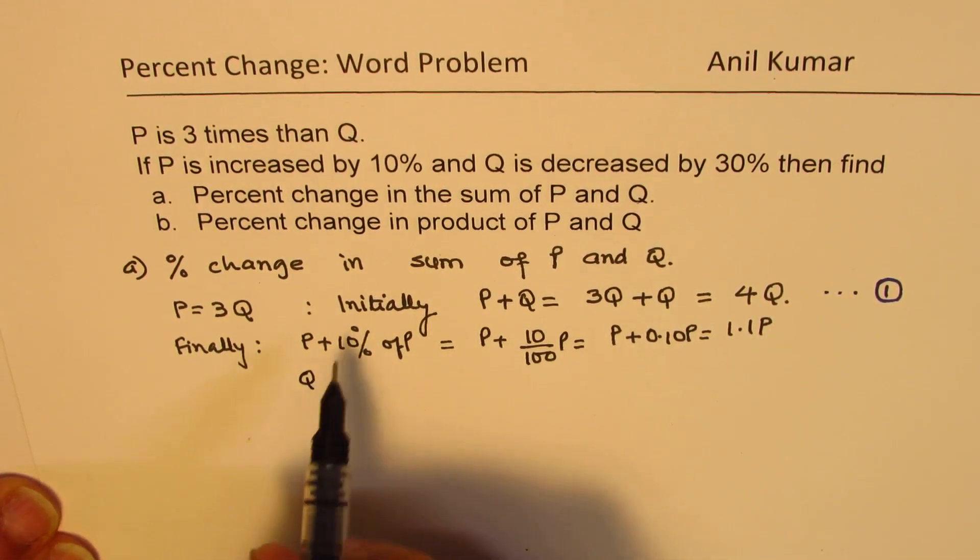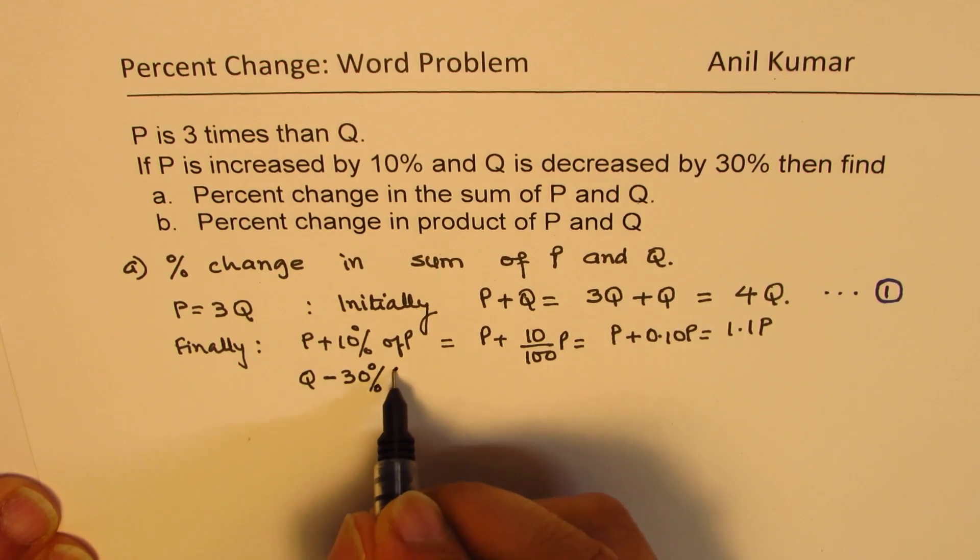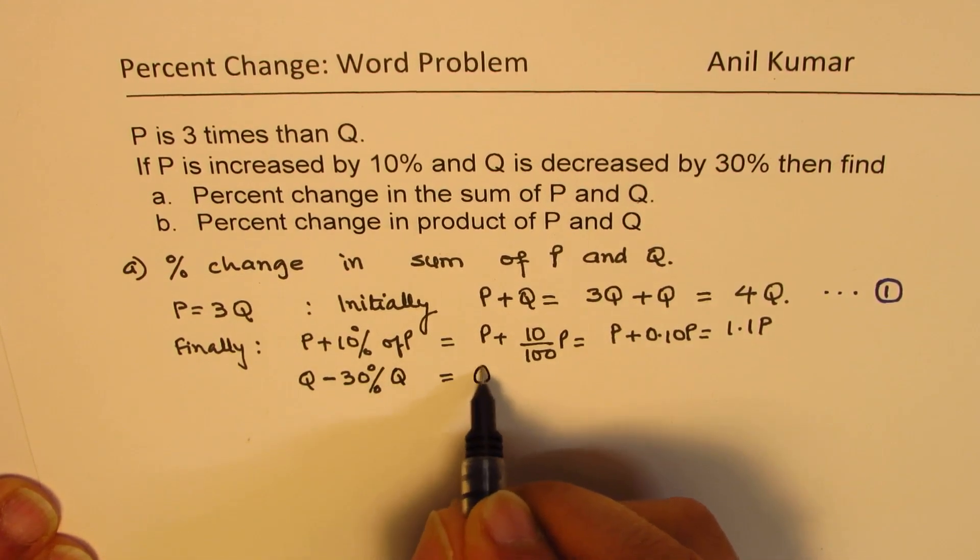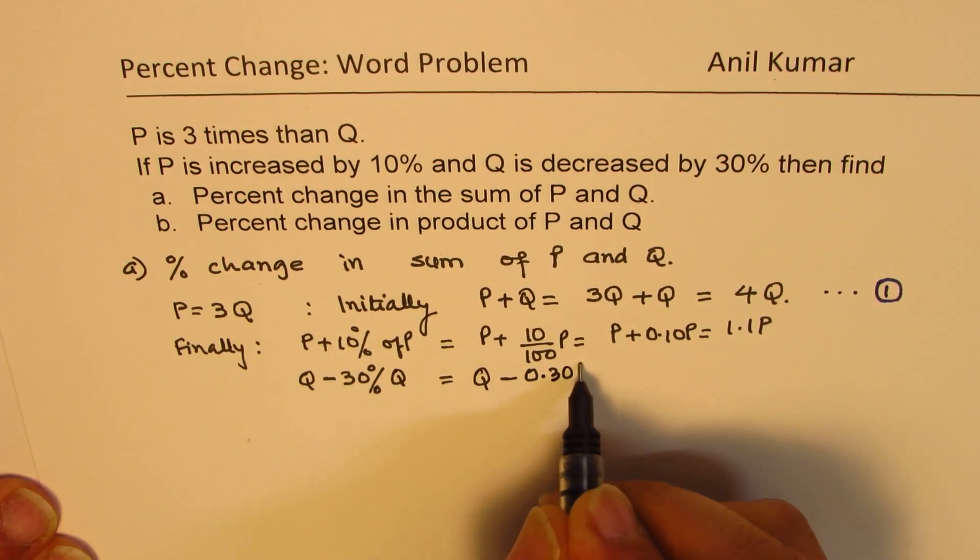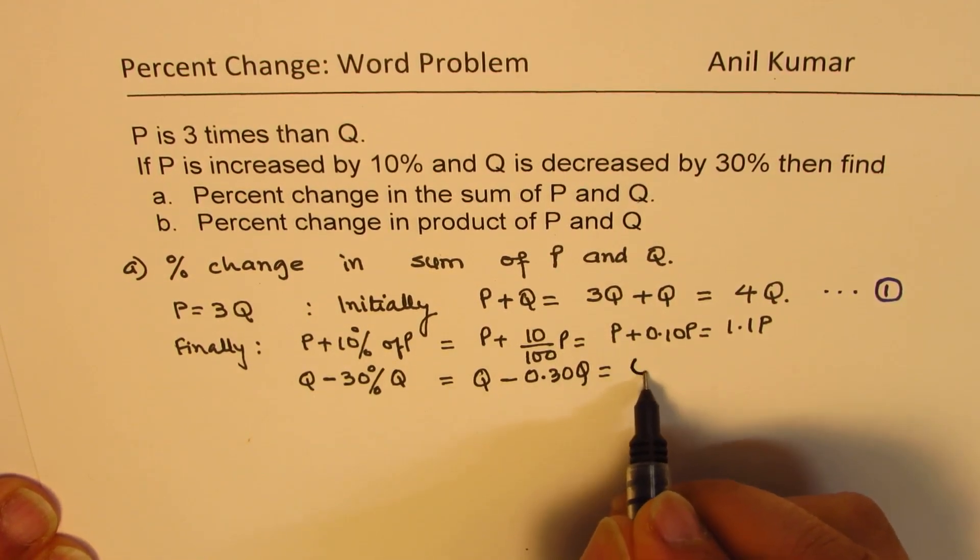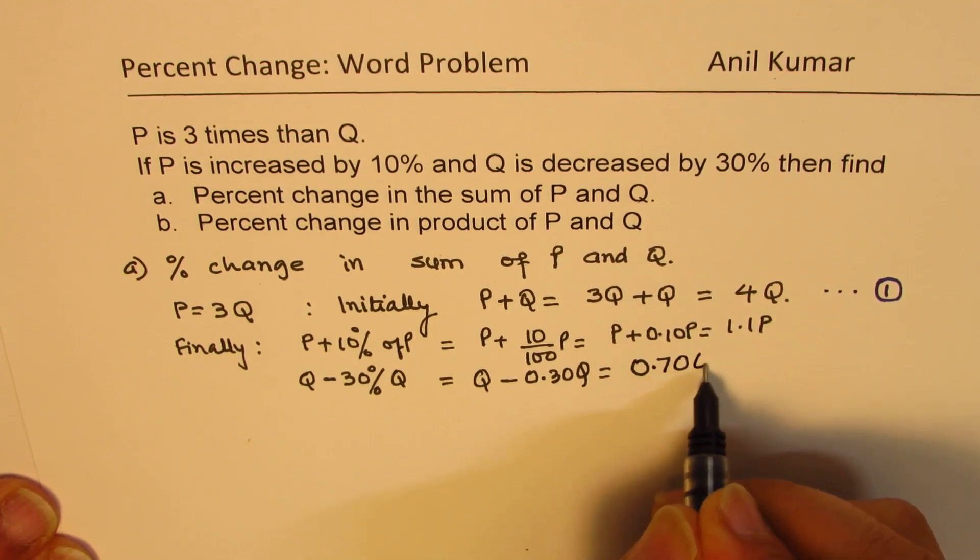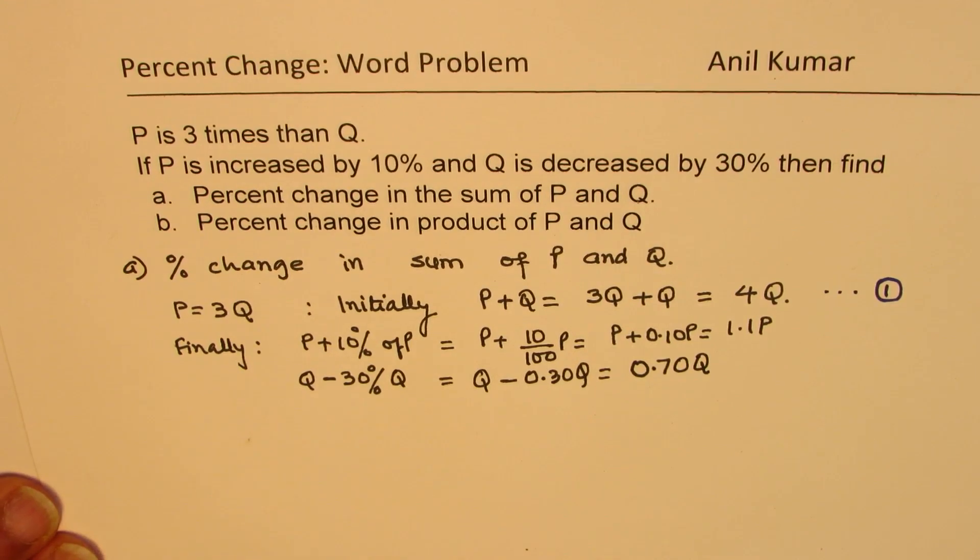As far as Q is concerned, it is decreased by 30%, so minus 30% of Q. That means Q value minus 0.30 of Q. I am not writing this step now. The other way is to write 70% of Q. So that is our final value.